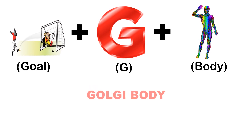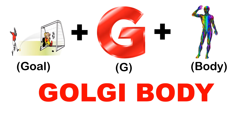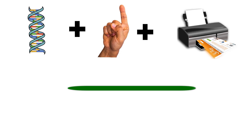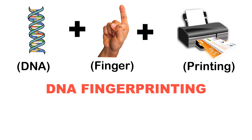The next puzzle — these emojis make Golgi body. The first emoji represents 'goal', the second G, and the third represents 'body', making Golgi body. Golgi bodies are organelles present in the cell that help in protein targeting.